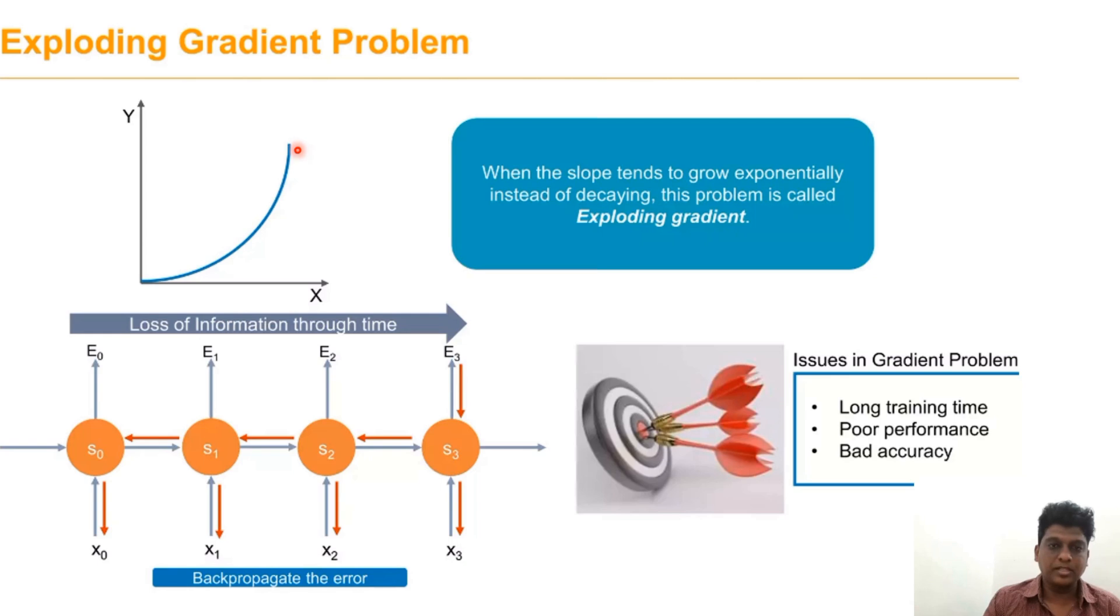Instead of decaying, when the slope grows exponentially, we call it the exploding gradient problem. The issues with gradient problems include requiring long time to train, poor performance, and affected accuracy.